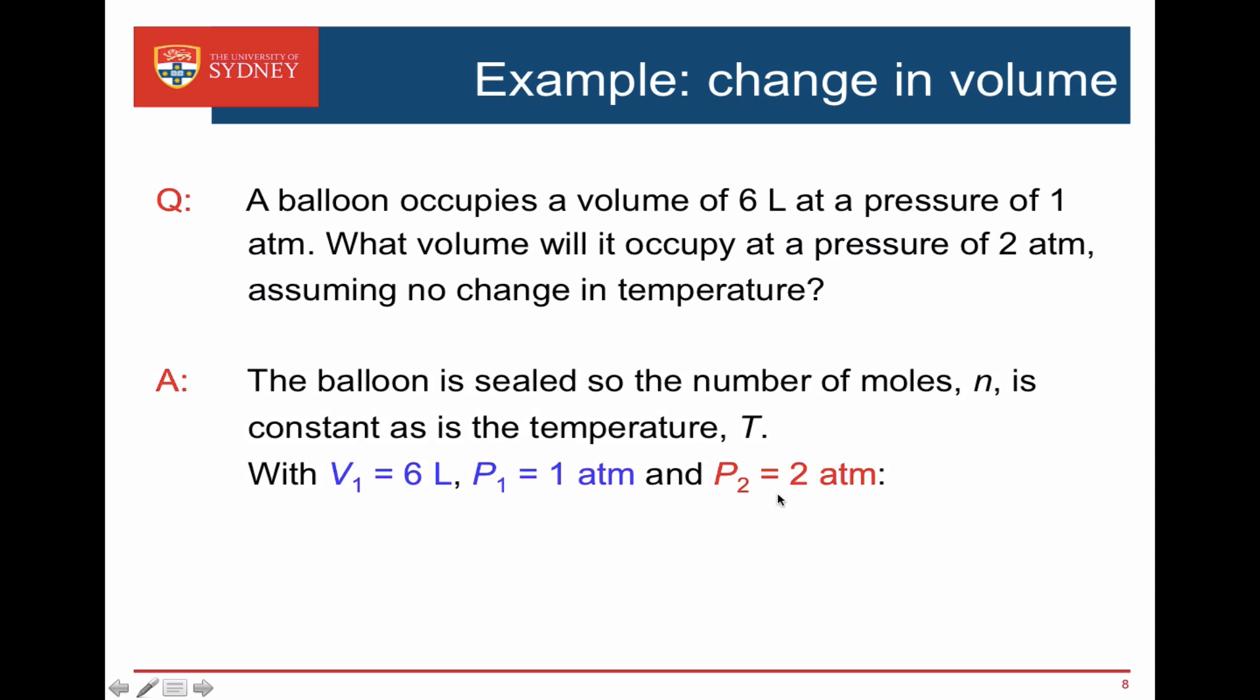So the initial volume is six liters and the initial pressure is one atmosphere. The final pressure is two atmospheres. What's the final volume? P1 times V1 equals P2 times V2. The initial pressure is one atmosphere. The initial volume is six liters. The final pressure is two atmospheres and we don't know what the final volume is. One atmosphere times six liters is the same as two atmospheres times V2. And hopefully you can see that the final volume must be three liters.